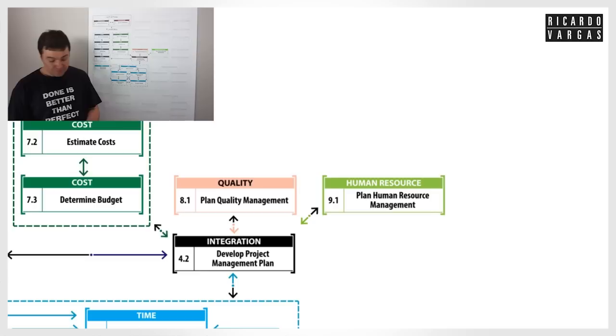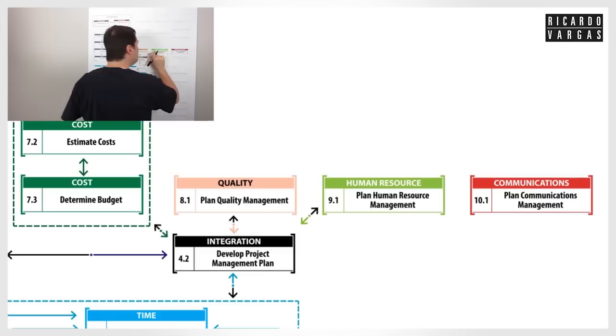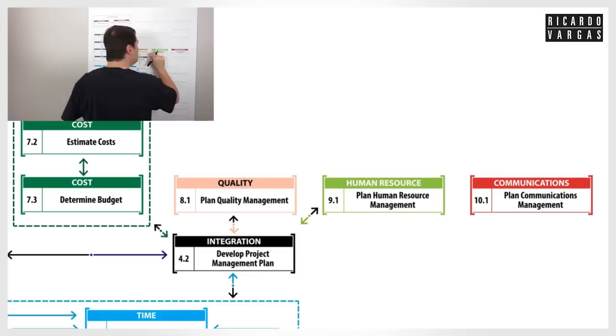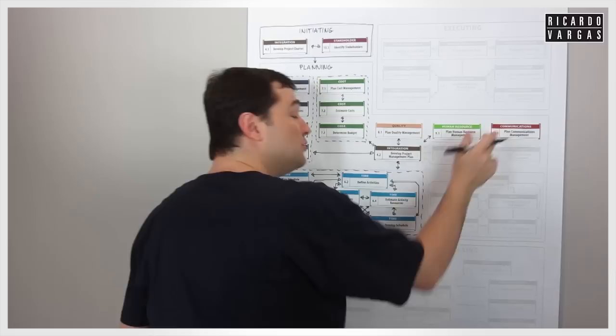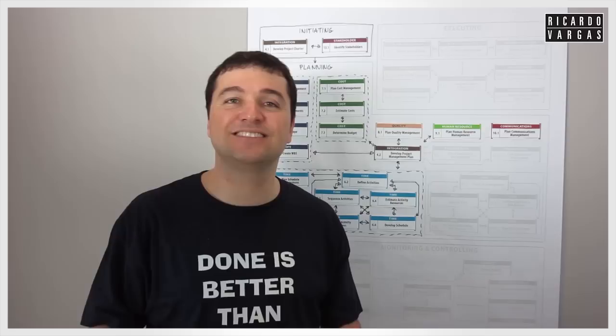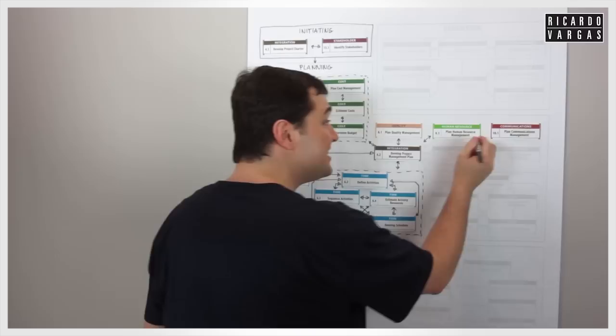After this, I need to work with the communication: plan communication management. The naming pattern is 'plan [knowledge area] management.' Here I think about which kind of reports I will be doing, which kind of meetings, how I can get information, and how I can create reliable information. This directly supports the project management plan I'm developing.